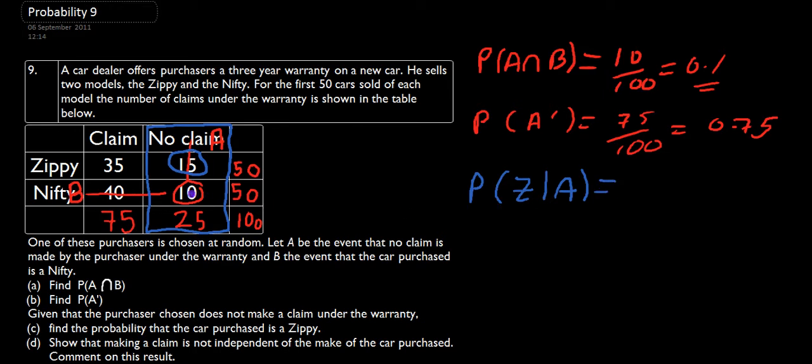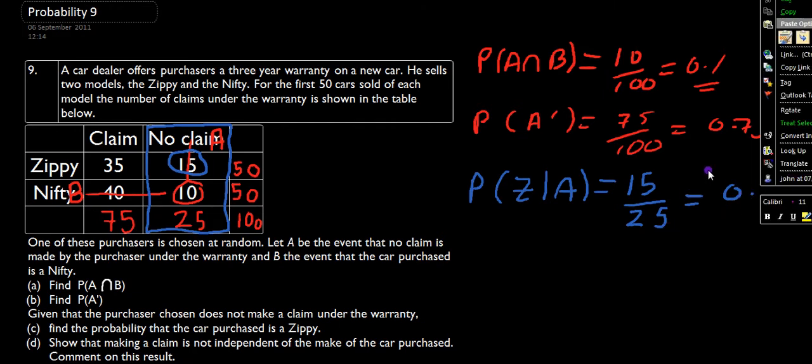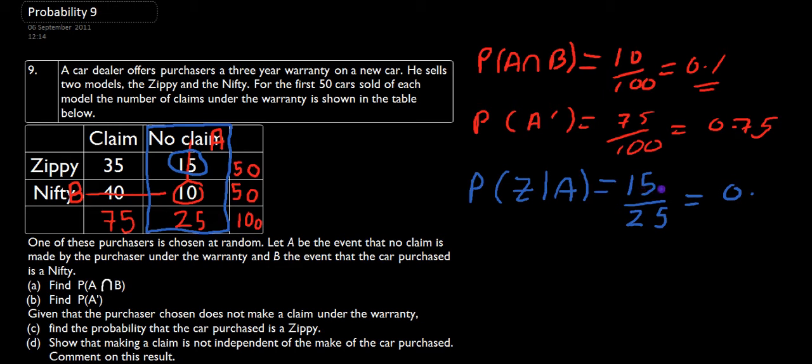Now, the number of Zippies is 15, and the number of times when no claim is made is 25. So that gives us 0.5 into there goes 3, 5 into there goes 5. So it's going to be 3 over 5, which is 0.6. That's our probability of that happening.